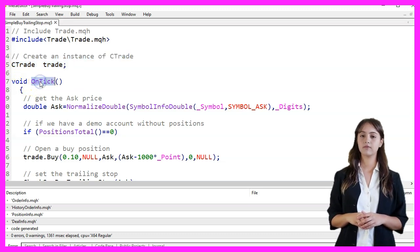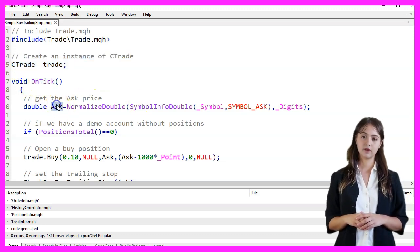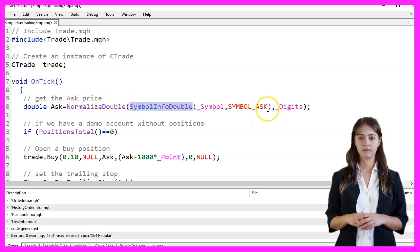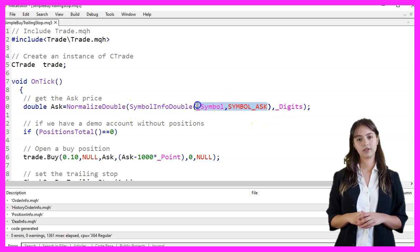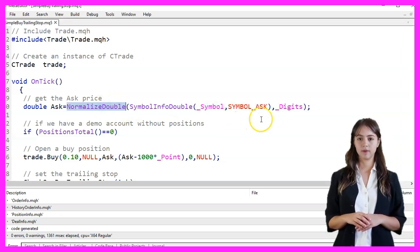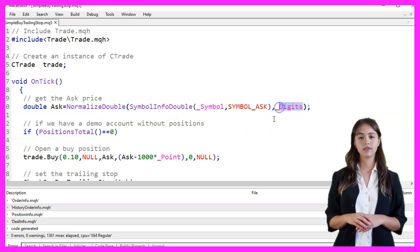Inside the OnTick function, we first get the current AskPrice using the SymbolInfoDouble function. This function retrieves the AskPrice for the current symbol, and NormalizeDouble ensures the price is formatted correctly to the number of digits specified by digits.